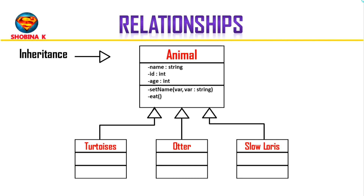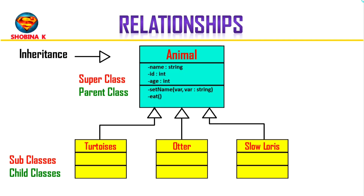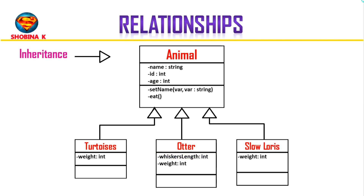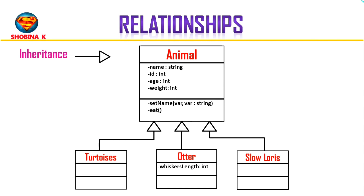This is an inheritance relationship. We are saying that these subclasses inherit all the attributes and methods of the superclass — you could also use the term child and parent class. The otter class is going to inherit the attributes of name, age, and id, and you could also add an attribute specific to otter, like whisker length. One advantage of inheritance is that if you want to change or add an attribute for all animals, you just make the change to the animal class and it is applied across all subclasses.